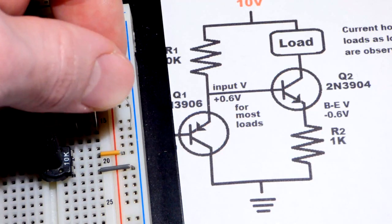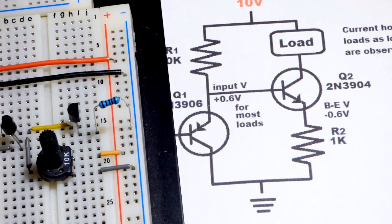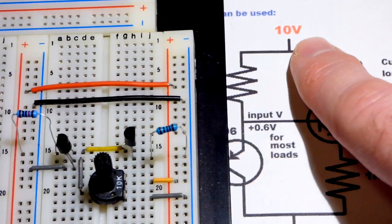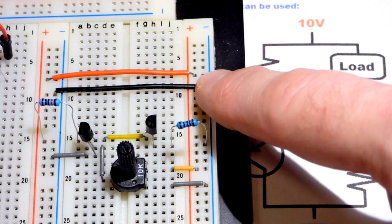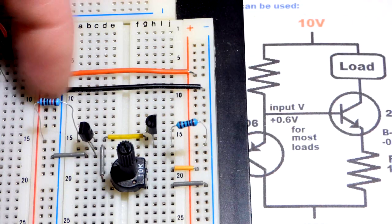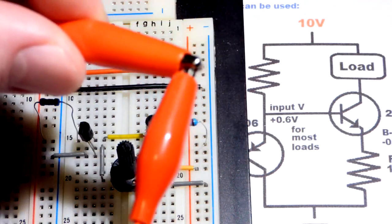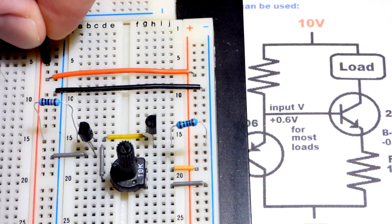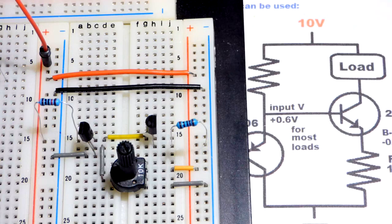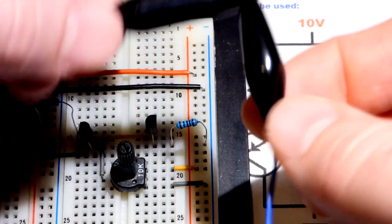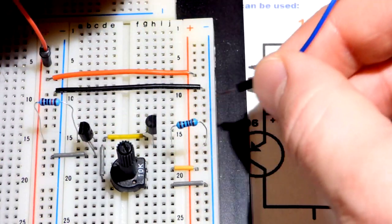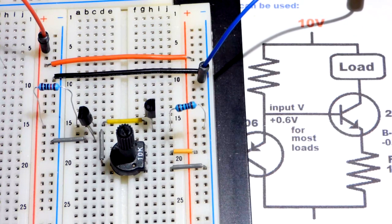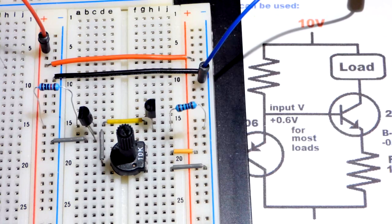We are pretty much done. The load can be pretty much anything—I'm going to use LEDs. First let's connect our power supply. I'm going to use a 10 volt power supply. We have jumpers connecting the rails. I have alligator clips from my bench power supply. I can go up to 18 volts, set to 10 volts right now. I'll plug it into the positive rail and the negative rail. We are done.